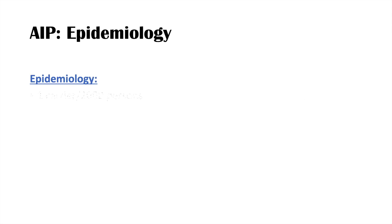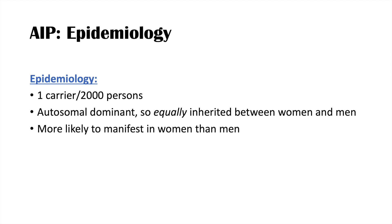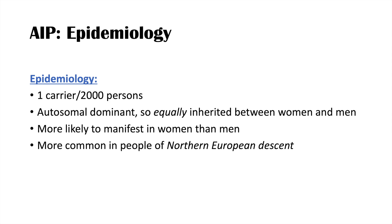The epidemiology of AIP: there is usually one carrier per 2,000 persons. It's an autosomal dominant condition, so it's equally inherited between women and men, but it's more likely to manifest in women than men - we'll talk about why in a moment. It's also more common in people of northern European descent.